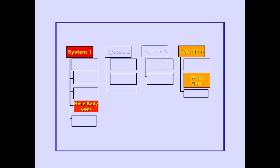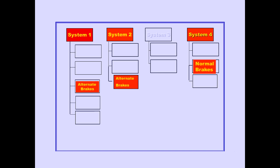Systems 1 and 4 power the landing gear. System 1 powers the nose and body gear. System 4 powers the wing gear. Systems 1, 2, and 4 power the brakes. Systems 1 and 2 power the alternate brakes. System 4 powers the normal brakes.